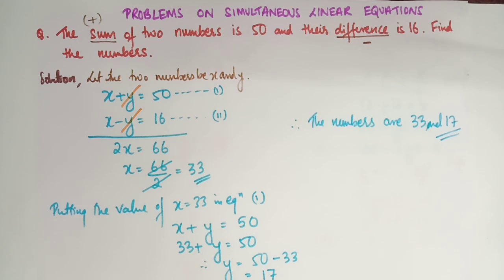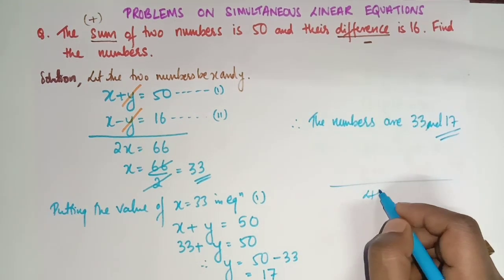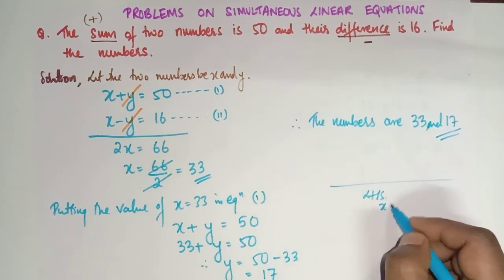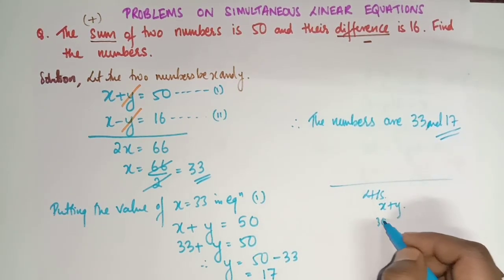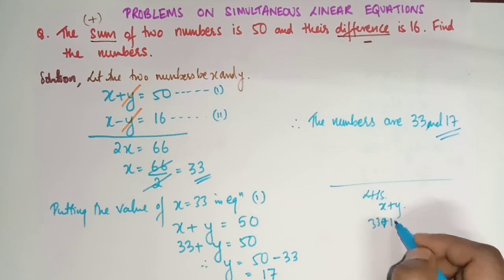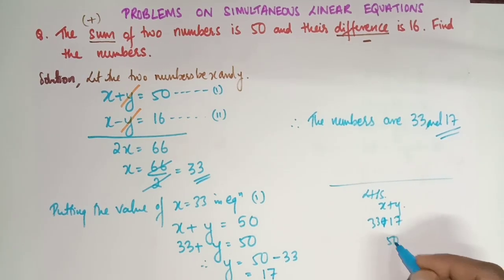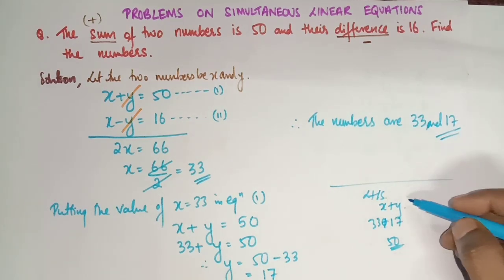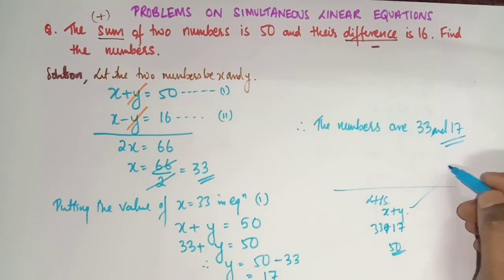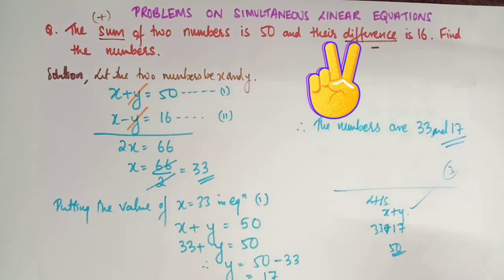You can check the answer. Left hand side: x + y = 33 + 17 = 50, which equals the right hand side. That means our answer is correct. This question carries 3 marks. Now let's do another sum.